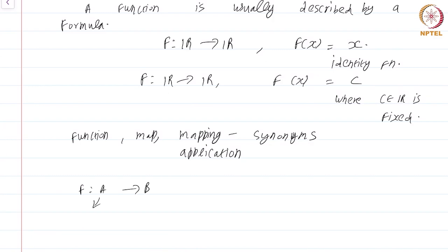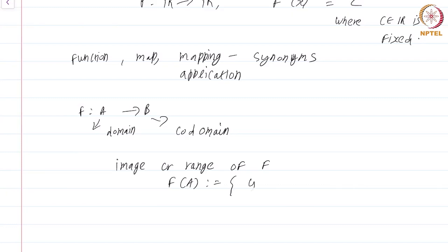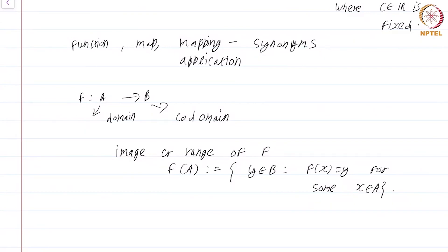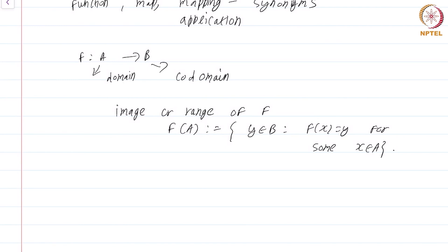When you have a function F from A to B, the set A is called the domain and the set B is called the co-domain. There is a third set called the image or range of F. This is the set F(A), defined to be the collection of all y in B such that F(x) equals y for some x in A. Note that range and co-domain are not the same: the co-domain is the set B in the definition A cross B, whereas the range is a subset of the co-domain.